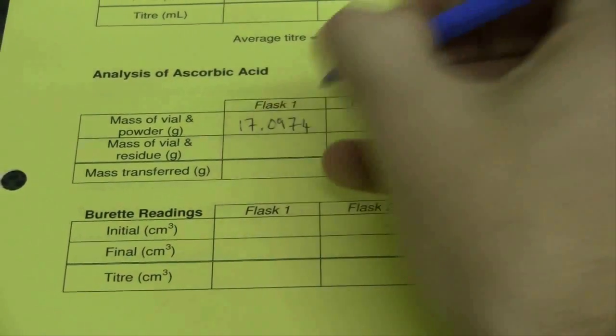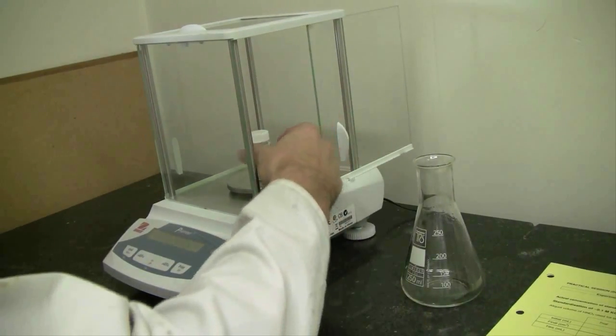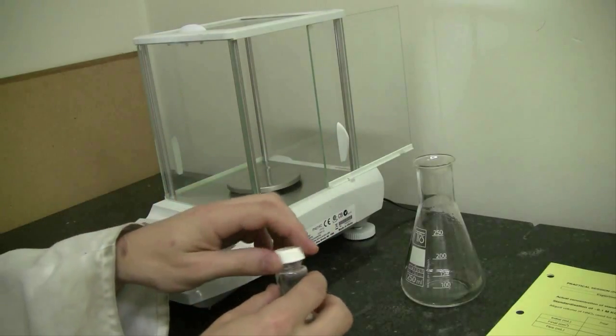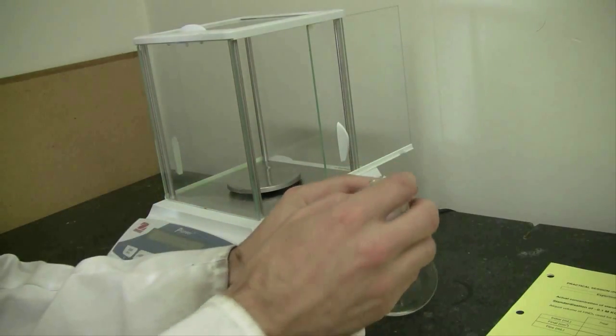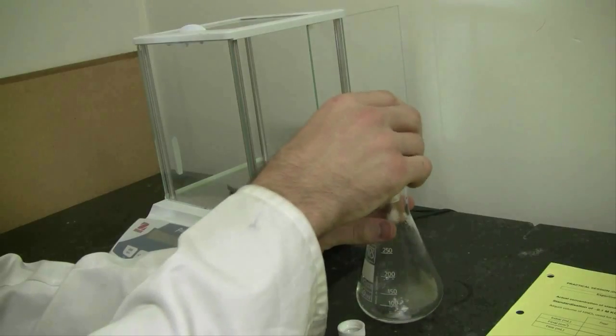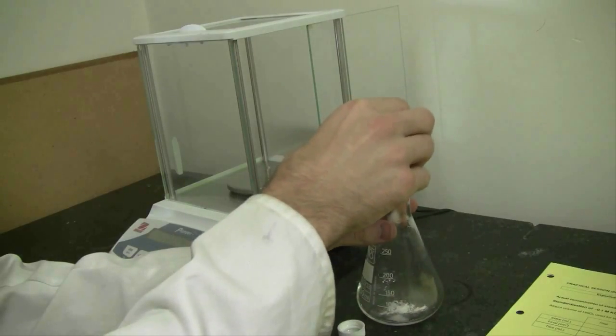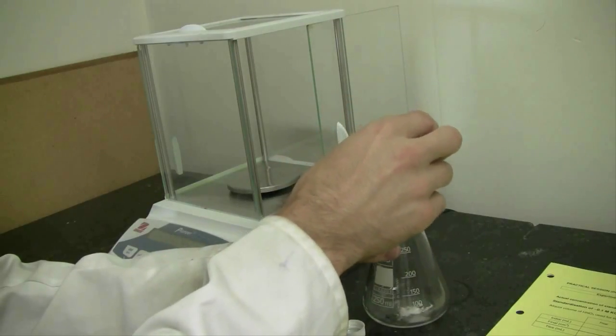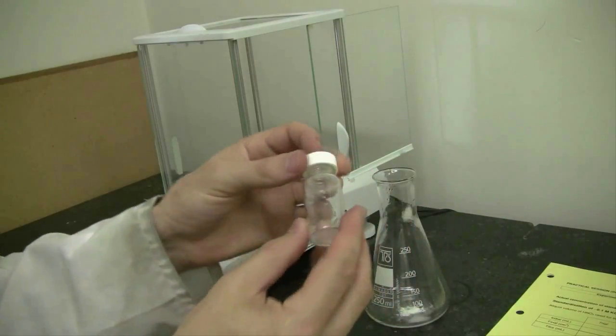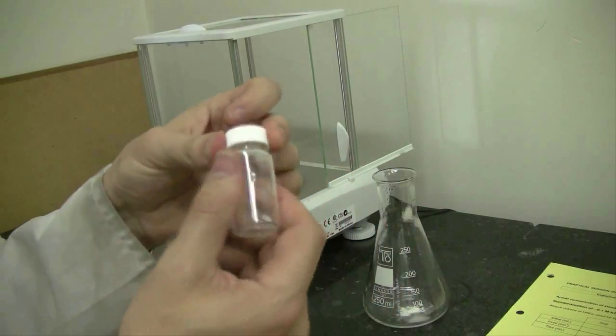Then take your sample out of the balance and carefully pour your sample into your conical flask. It's important to make sure that you don't spill any of your sample outside the flask. Once you're finished pouring, there may be a small amount of residue left in the vial and that's fine - it's not an issue. This technique is measuring the mass that you've delivered by difference.